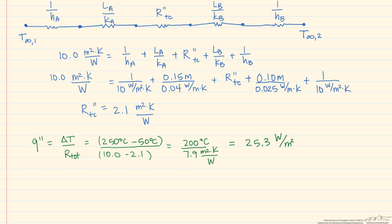So not having or not including that contact resistance gives us a higher flux because we don't take into account the temperature drop that's caused by it.